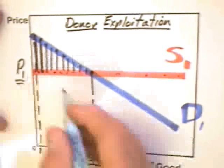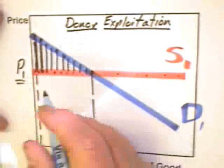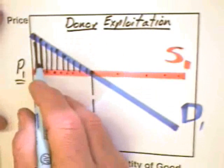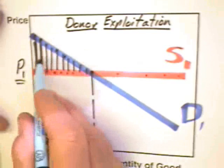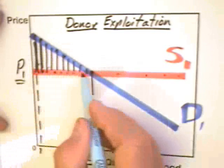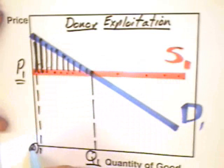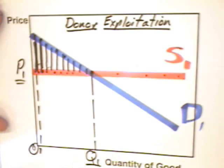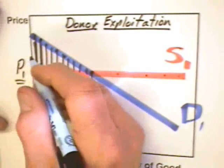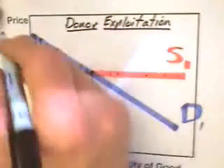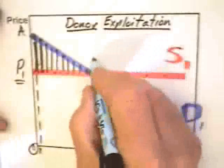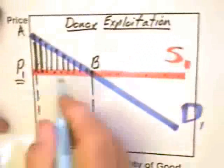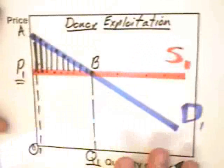The total gains of the donor are equal to the net gains on each individual gift from zero units up to Q1, which is the triangular area P1AB.